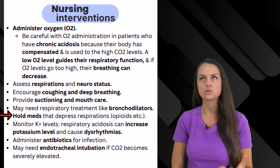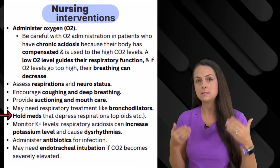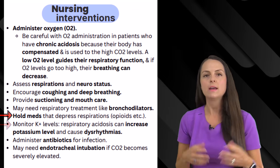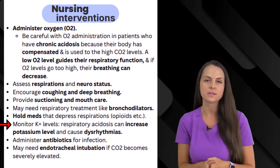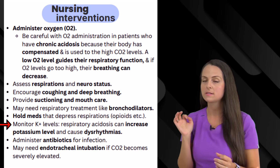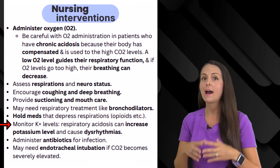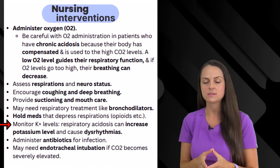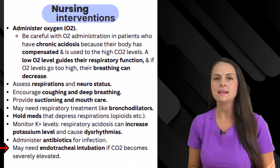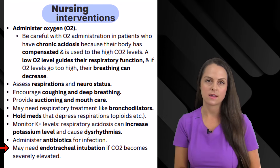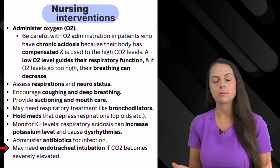If a patient is in respiratory acidosis, review their medication list and ask yourself if anything could be decreasing their breathing rate — don't give that right now. Monitor electrolytes, because acidosis can cause potassium to leave the inside of the cell and go to the extracellular compartment — the blood plasma — which could lead to hyperkalemia. Hyperkalemia can affect the heart and cause dysrhythmias, so watch the ECG as well. Lastly, if the patient's CO2 levels are getting too high, they may need help blowing off carbon dioxide — they may be intubated for mechanical ventilation to decrease those CO2 levels, so help get your patient prepped for that.